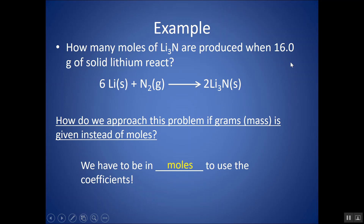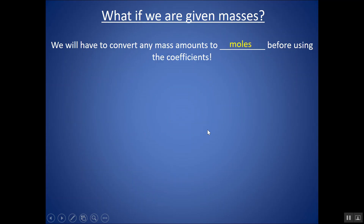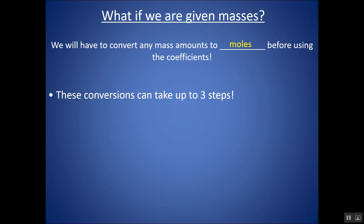If you're given mass or grams to start with, you're going to have to mole that out. Turn those grams into moles first with one conversion factor. Then you can use the coefficients in another conversion factor to convert from moles of one substance to moles of another. You convert mass to moles using the molar mass.